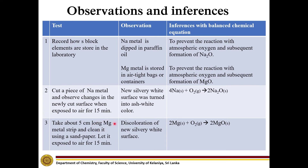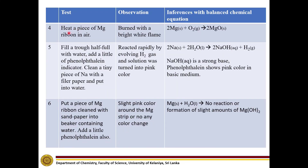When we expose a new magnesium surface to air, discolouration can be observed on the new surface due to the formation of magnesium oxide. When a piece of magnesium ribbon is heated in air, it forms magnesium oxide and burns with a bright white flame.